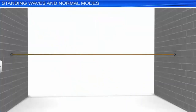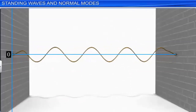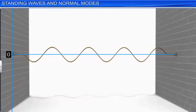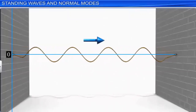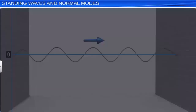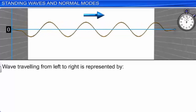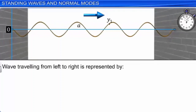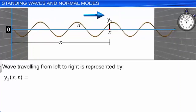Let us consider a system bounded at both ends, such as a stretched string fixed at both ends. Let us generate a continuous sinusoidal wave of a certain frequency moving to the right. This wave can be represented by y1(x,t) = a sin(kx − ωt). Let this be equation 1. This wave, on reaching the right end, gets reflected and travels to the left.